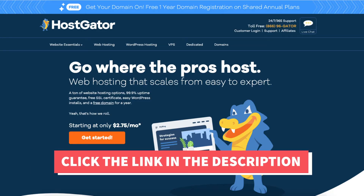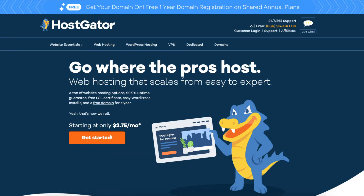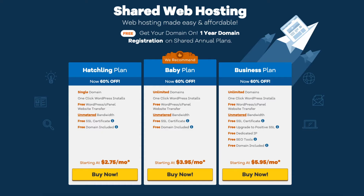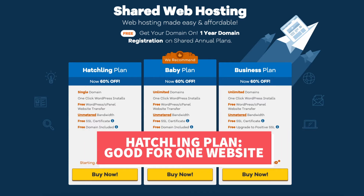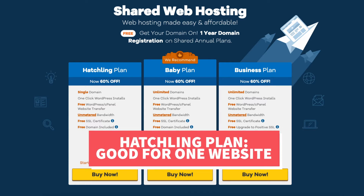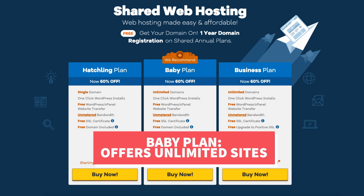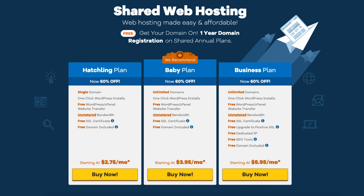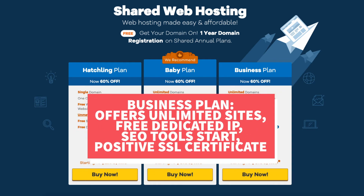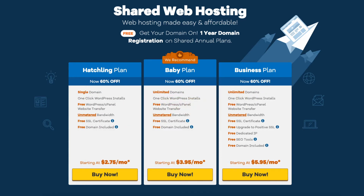Once you click the link in the description below you'll be at the Hostgator homepage. Click the get started button. You'll now see three different plans: the Hatchling, Baby, and Business plan. The Hatchling plan is a great plan if you're going to have one site. If you're going to have more than one site then you would want to select the Baby plan, as this plan offers unlimited sites. The Business plan comes with unlimited sites and includes a free dedicated IP, Hostgator's SEO Tool Start add-on, and a free upgrade to a positive SSL certificate. I recommend going with the Hatchling or Baby plan when starting out, and then you can always upgrade to the Business plan as your site traffic and revenue grows. You can upgrade or downgrade to any of the plans at any time.